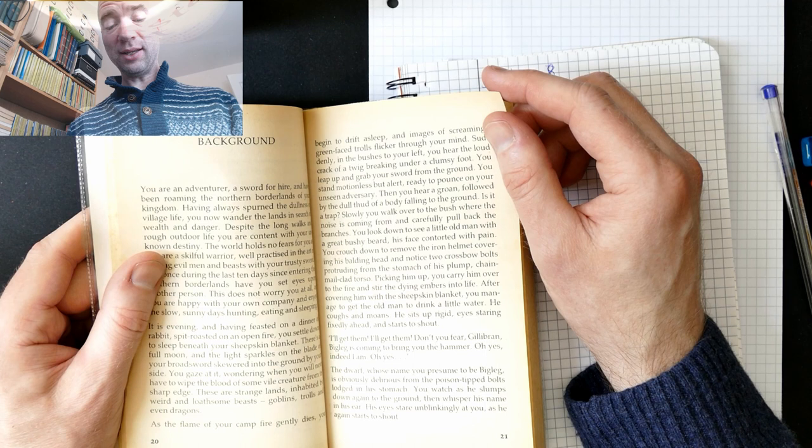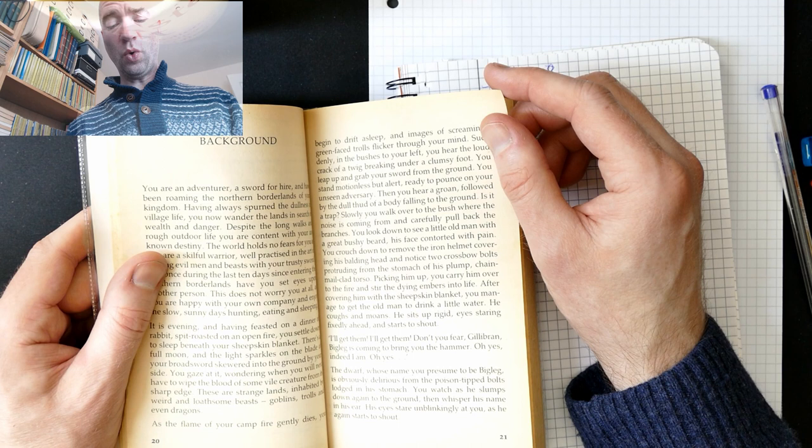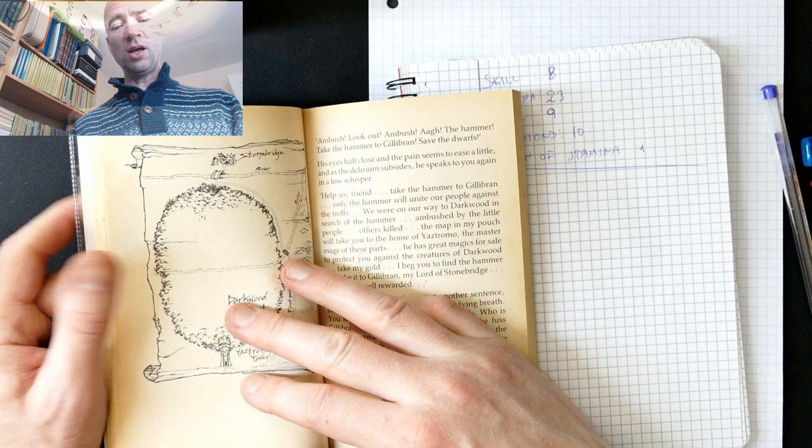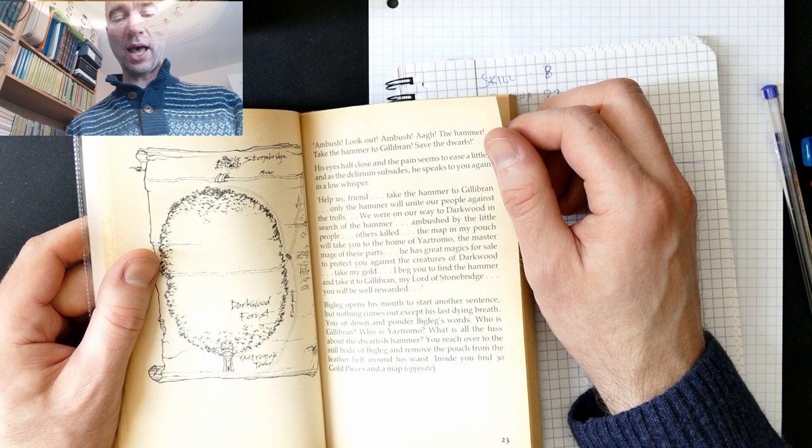I'll get them! I'll get them! Don't you fear, Gillibrand! Big Leg is coming to bring you the hammer! Oh yes, indeed I am! Oh yes! The dwarf, whose name you presume to be Big Leg, is obviously delirious from the poison-tipped bolts lodged in his stomach. You watch as he slumps down again to the ground, then whisper his name in his ear. His eyes staring blinkingly at you as he again starts to shout. Ambush! Look out! Ambush! Oh! The hammer! Take the hammer to Gillibrand! Save the dwarves!